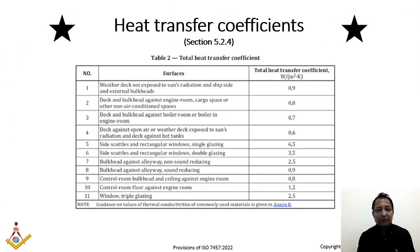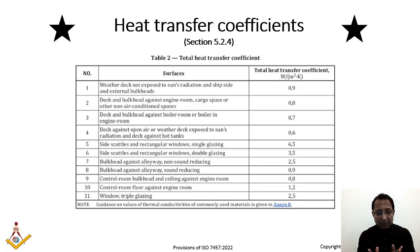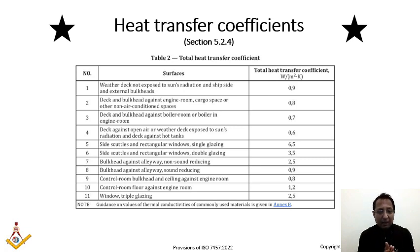The heat transfer coefficient formula is in Section 5.2.4, but early in a project when purchase orders have not been placed, you won't have detailed data. The standard itself provides default values you can safely use without concern, as they are already on the conservative side and will not significantly impact heat load calculations. For instance, weather deck not exposed to sun radiation and ship inside external bulkheads is 0.9 W/m²K; deck and bulkhead against engine room and cargo spaces is 0.8.